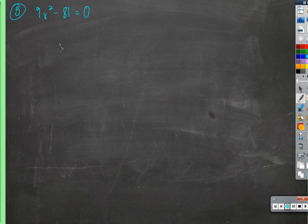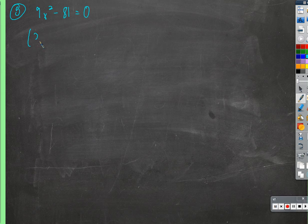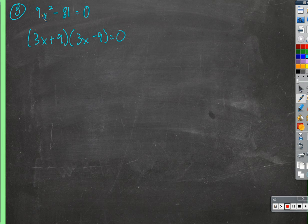We'll start with number 5. I just want to point out that we're using a new idea. For instance, this is a difference of squares, and we could solve it with factoring. I'll do that, and then I'll remind you why what we're doing in this section is new and different. So this could be factored as 3x plus 9 times 3x minus 9, because that's how we would factor this difference of squares.